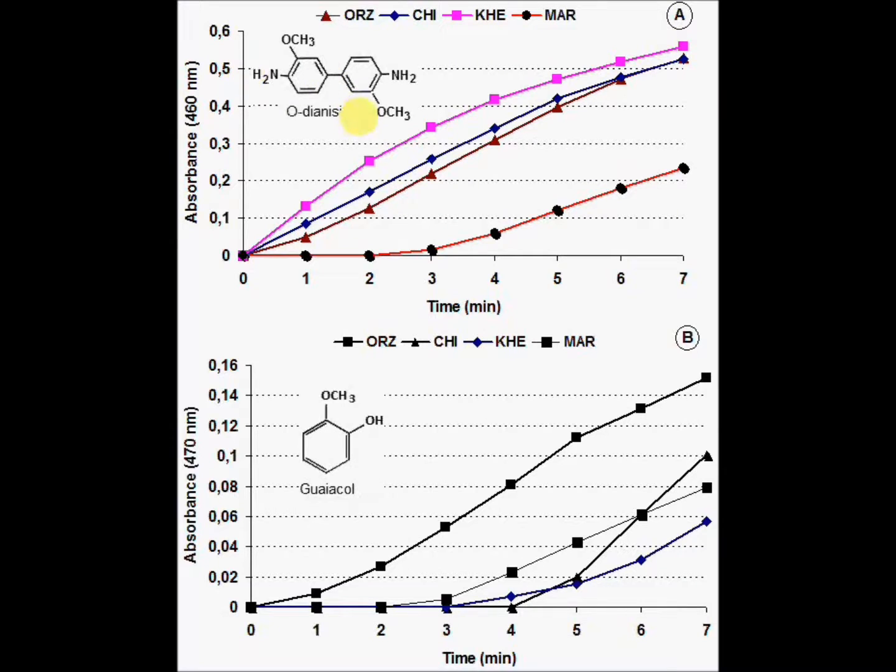When compared with orthodianisidine as substrate for peroxidase, guaiacol as substrate gives kinetics typified by a lag time here and here for many ecotypes. This lag time is not frequent in the case of orthodianisidine, and 80% of ecotypes showed lag time kinetics with guaiacol versus only 10% when using orthodianisidine.